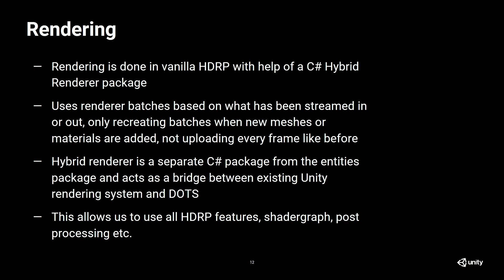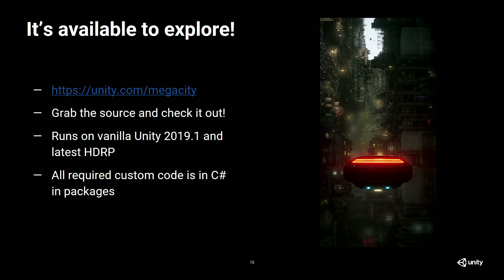The hybrid renderer is a separate C# package from the entities package. It acts as a bridge between the existing Unity rendering system and the data-oriented tech stack, and importantly it allows us to use all the other HDRP features like Shader Graph or the post-processing stack. It allows our artists who already know HDRP to continue using the workflows they're familiar with. It's available now to explore — you can go to unity.com/megacity, grab the source, and check it out. It has all the source code, all the assets, all the required custom code, and runs on 2019.1. Thank you so much for joining me and listening — I'll take some questions if anybody has any.